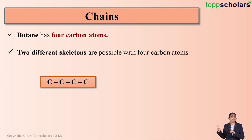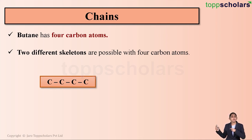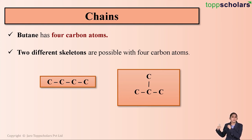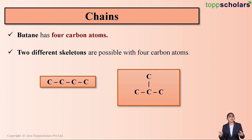One possible skeleton is where the carbon atoms are linked to each other in the form of a straight chain — you can see the four carbon atoms linked together in a straight line. The other possible carbon skeleton is where three carbon atoms are linked in a straight chain, while the fourth carbon atom is linked to the second carbon atom — this is a branched chain structure. So for four carbon atoms, we can have two possible carbon skeletons: one straight chain and one branched chain.